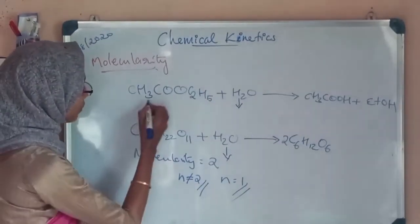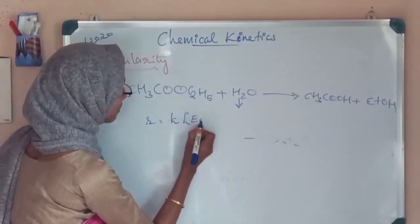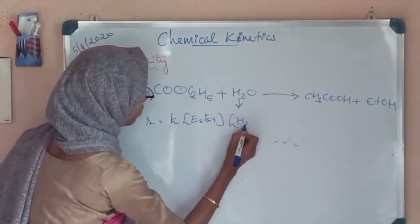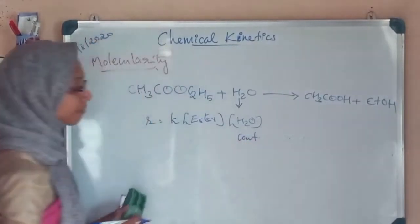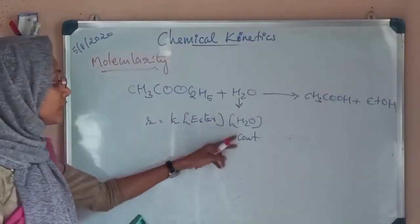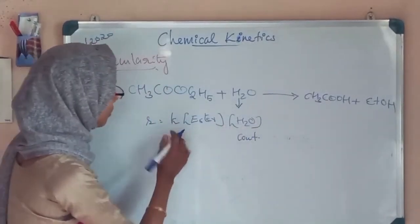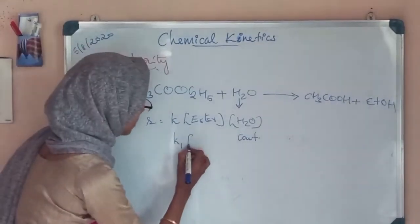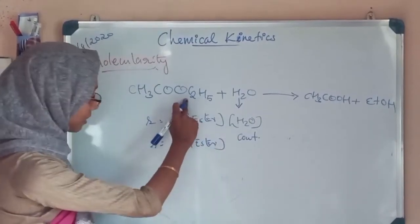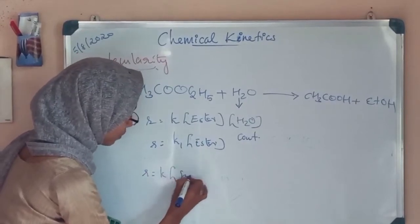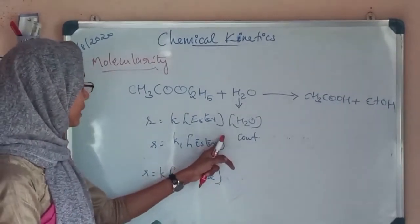We know that the rate of the reaction is expressed as r = k × [ester] × [water]. Here water is taken in large excess, so it is always a constant. A constant multiplied by another constant is equal to a new constant, so the rate simplifies to r = k' × [ester] for ester hydrolysis, and r = k' × [sucrose] for the hydrolysis of sucrose. So the order of these reactions is equal to 1.